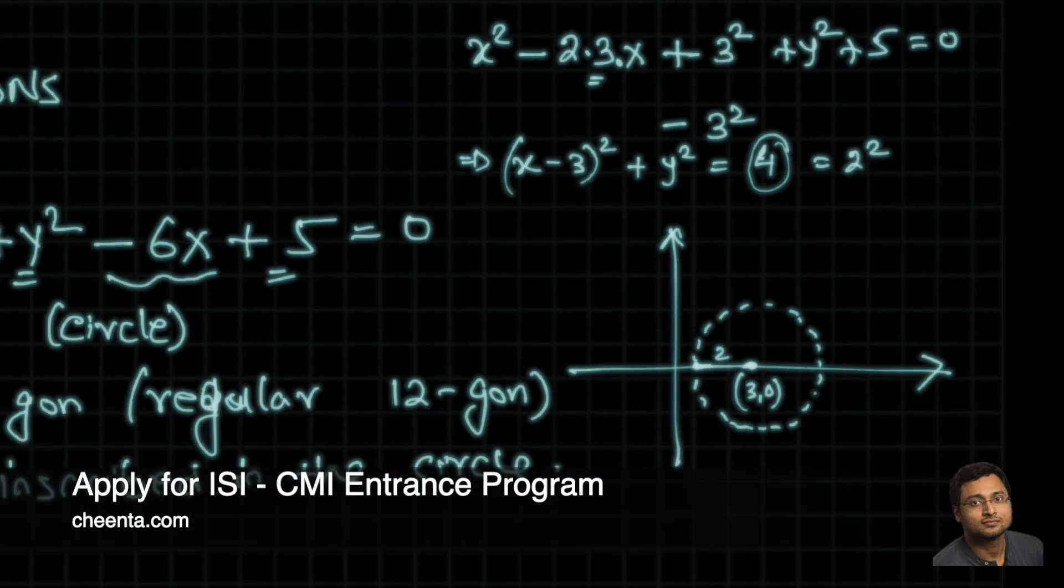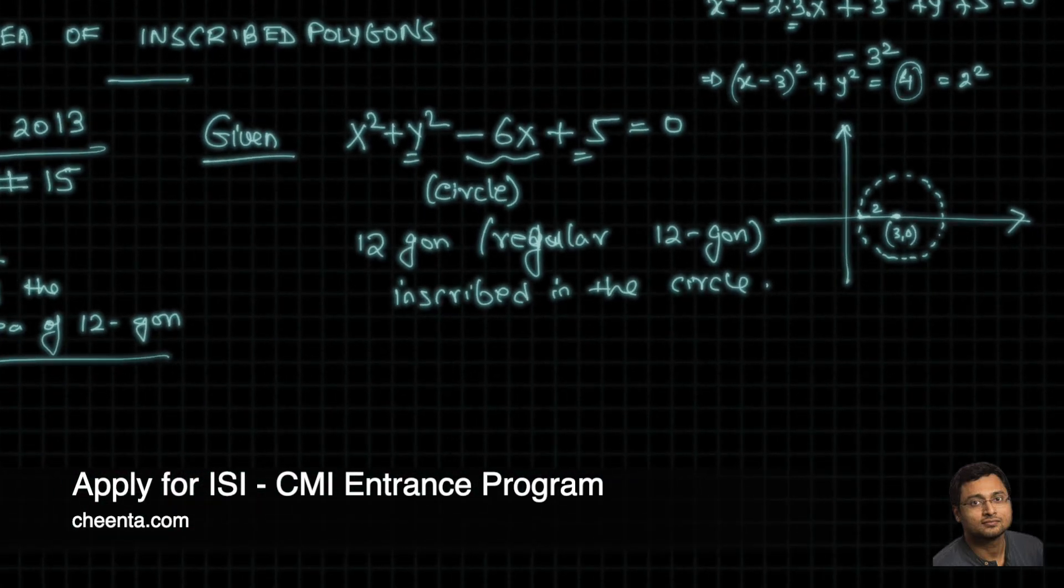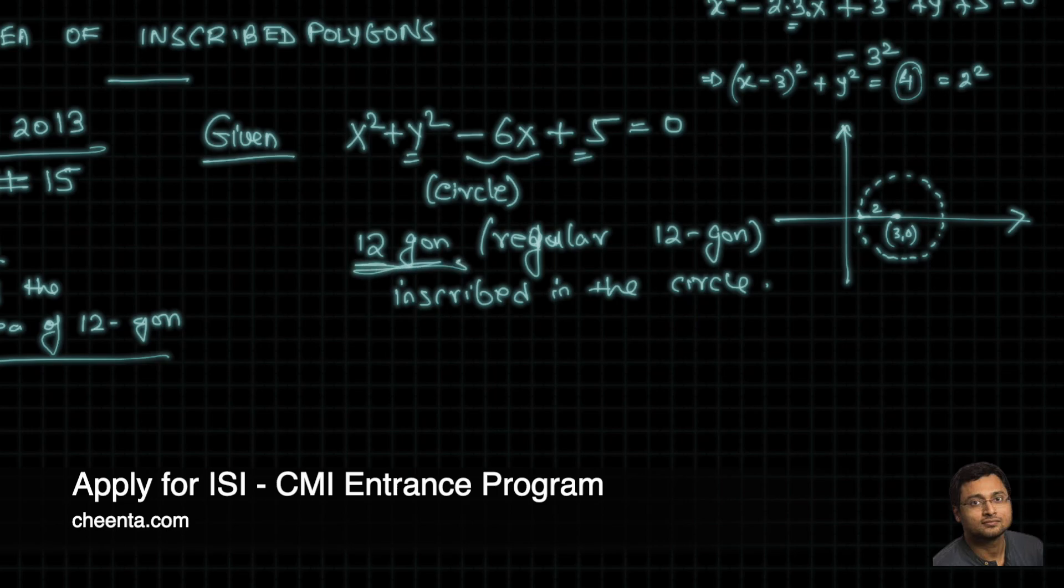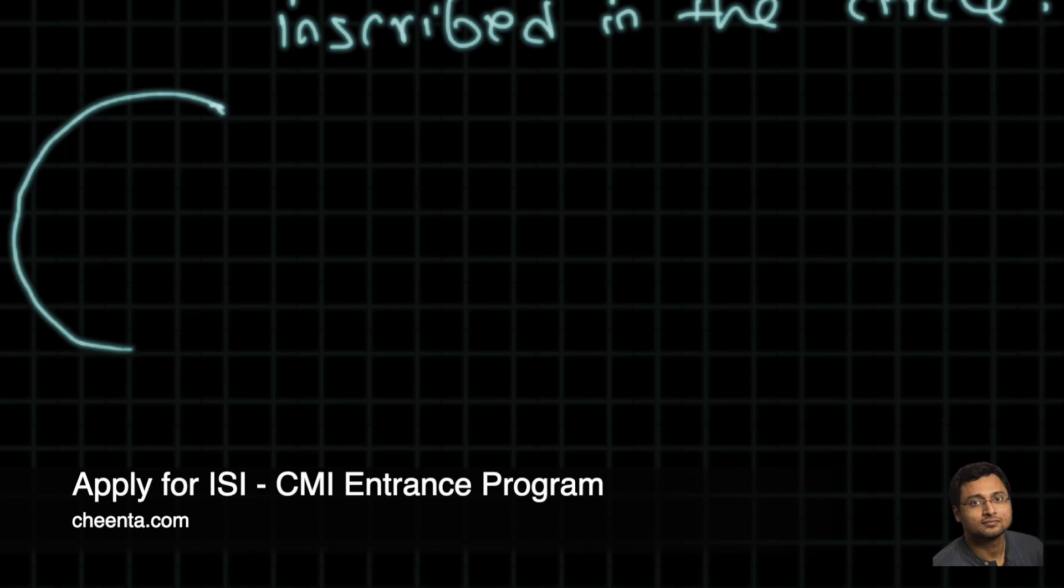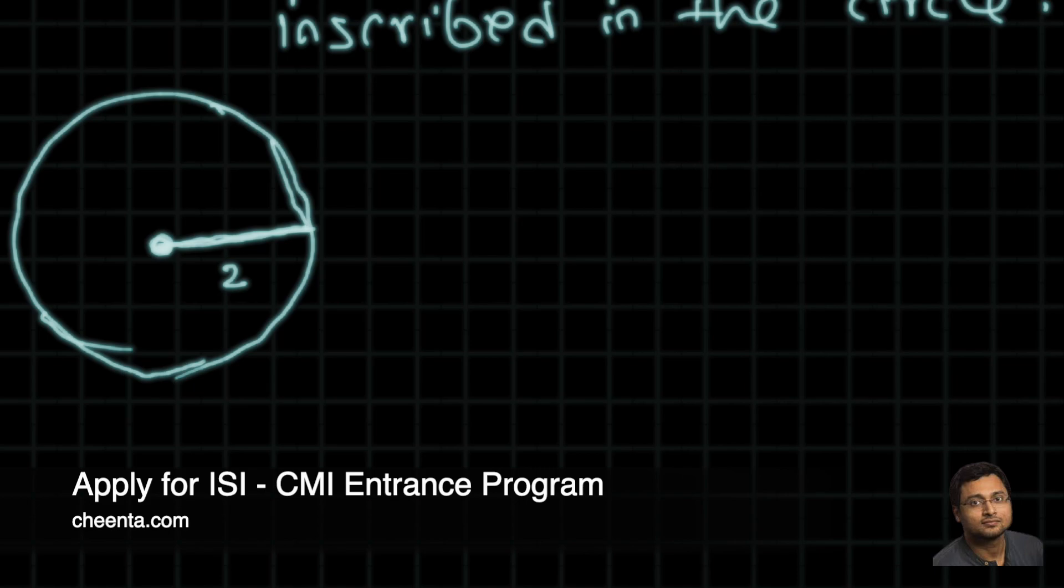All right, so what we really want is the area of a 12-gon that is inscribed in a radius 2 circle. Now let's see how we can find that out. So we have a circle with radius 2, and there is a 12-gon like this. I'm not drawing the entire polygon, I'm drawing some sides of it. There will be 12 sides like this, and we want to find out the area of this 12-gon.